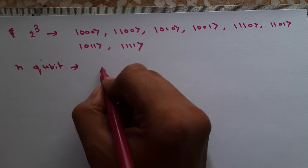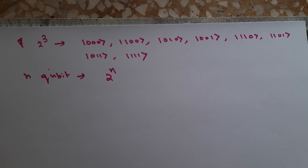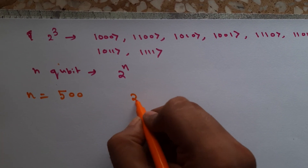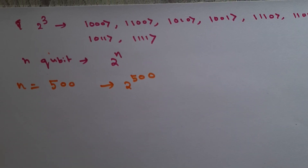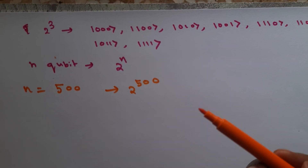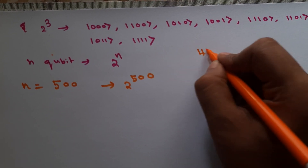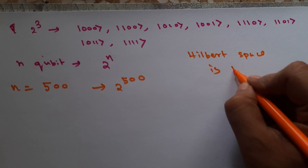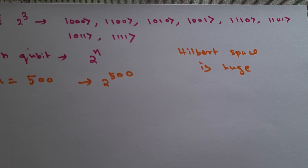Similarly, for a general n-qubit state, the number of basis states is 2 to the power n. Even for n = 500, 2^500 basis states are needed — and that number is more than the total number of atoms in the entire universe. So the Hilbert space — the space formed by the basis of qubits — is enormous.